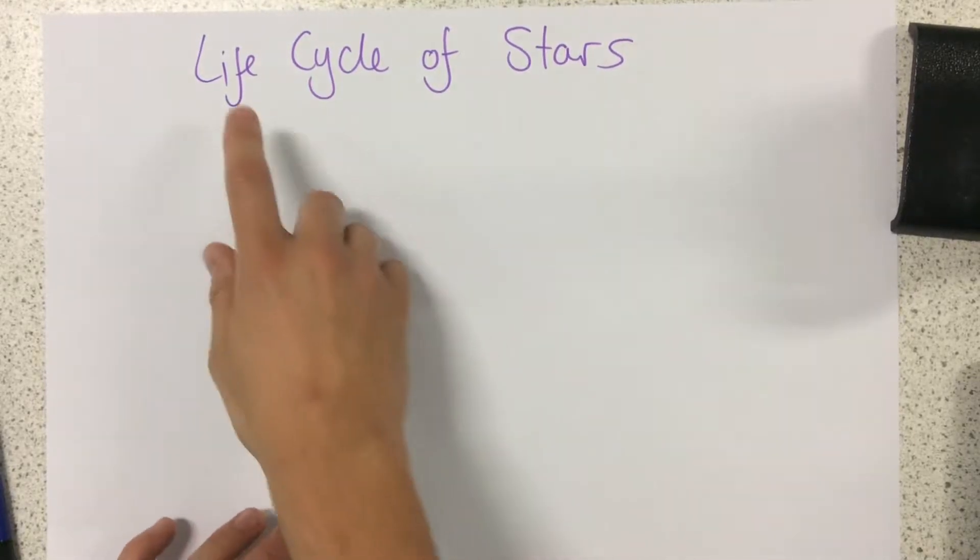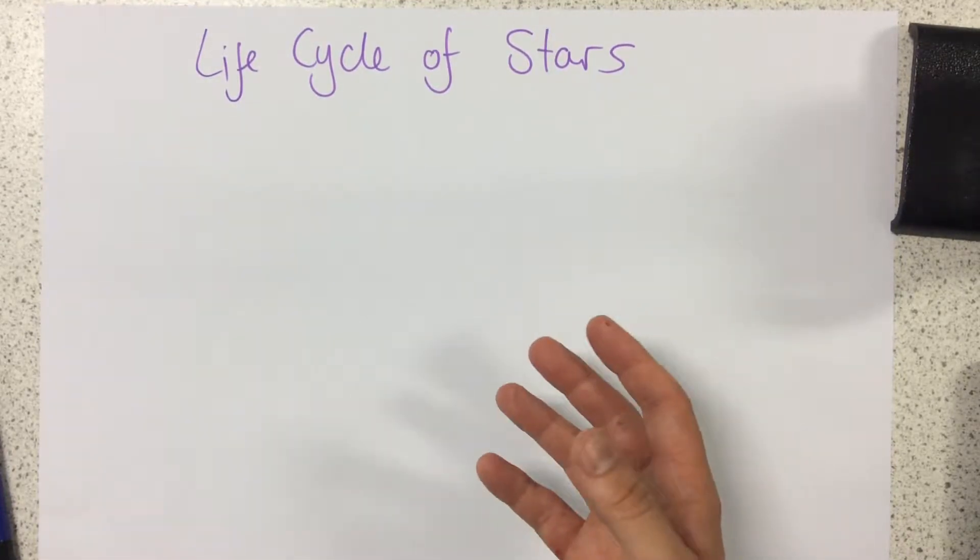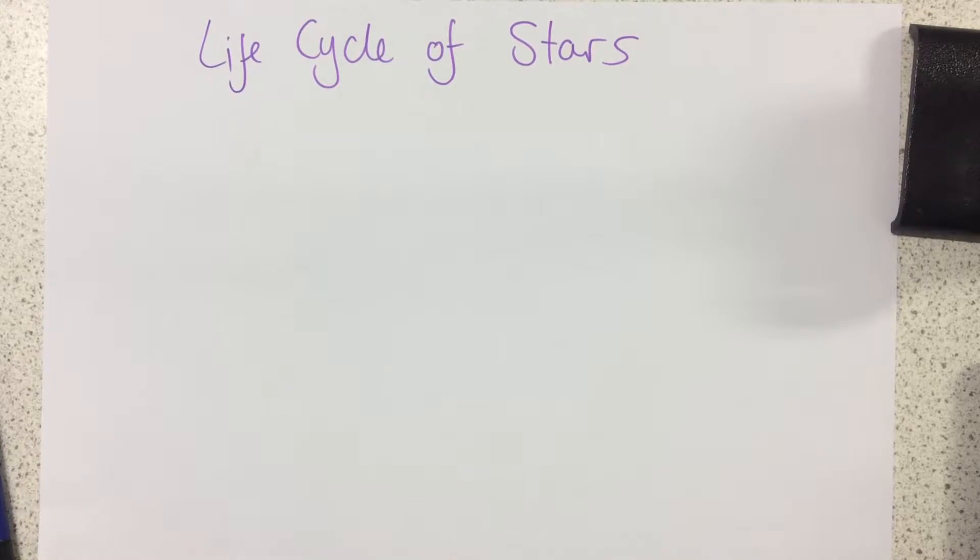Okay, I'm going to talk to you about the life cycle of stars. This means how stars are formed and what happens to them after they essentially die. So we're going to see what happens to stars.